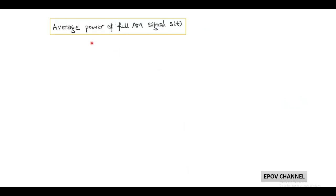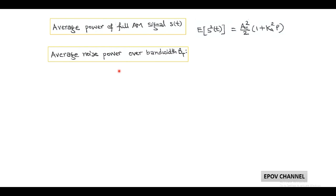So, the average power of the full AM signal is E[S²(t)] = AC²/2 · (1 + KA²·P). Also, the average noise power over the transmission bandwidth is E[N²(t)] = N₀·BT, where BT is the transmission bandwidth and N₀ is the average noise power per unit bandwidth.